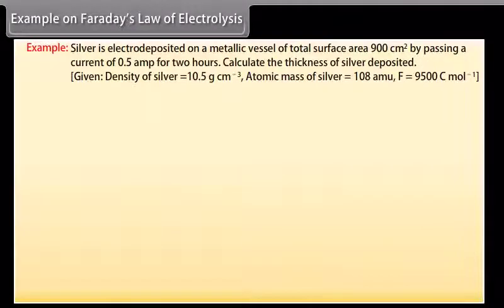Example on Faraday's law of electrolysis. Let's take an example on Faraday's law of electrolysis. Silver is electrodeposited on a metallic vessel of total surface area 900 cm square by passing a current of 0.5 ampere for 2 hours. Calculate the thickness of silver deposited.